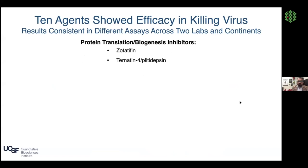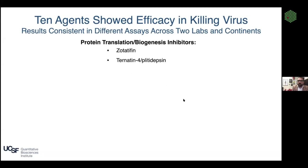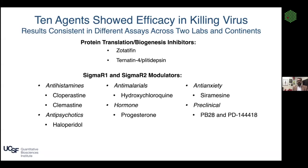Approximately 10 agents showed potent antiviral effects in the laboratory setting. The first group are drugs and compounds targeting protein translation, including zotatifin — presently in a clinical trial for multiple myeloma from the company eFFECTOR — which binds and inhibits EIF4A, a translational initiation protein. We found its binding partner EIF4H in our protein-protein interaction map binding to NSP9. There's also ternatin-4, which binds EIF1A, a translational elongation factor, and pladienolide/plitidepsin, which is in a clinical trial for COVID-19.